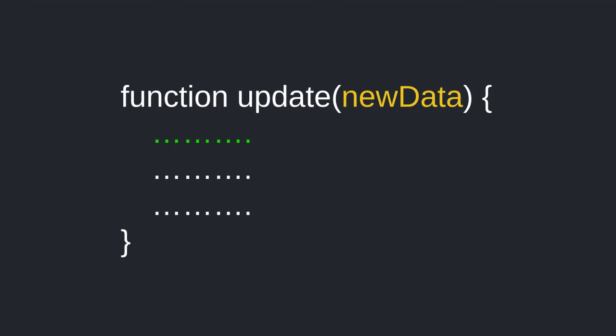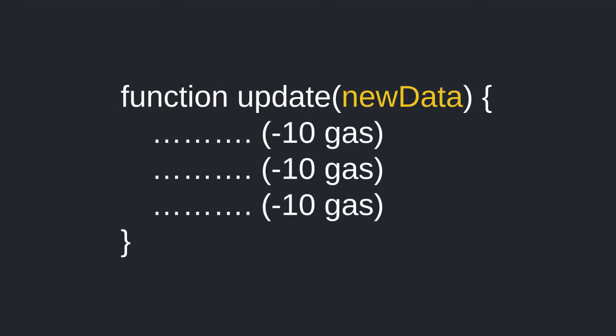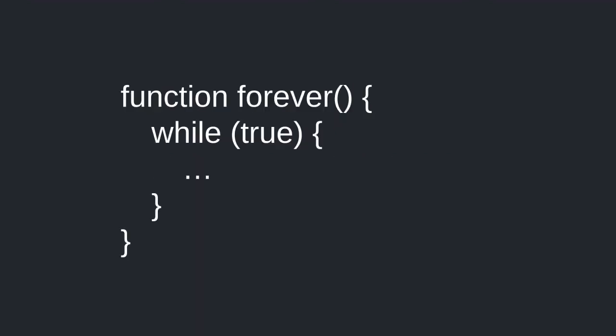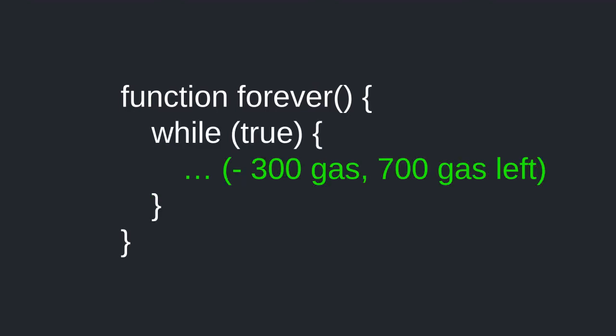At every step of computation, gas is deducted until either the function finishes execution or all the gas is used up, at which point execution is aborted. The purpose of gas is to limit the amount of computations a transaction can do. For example, imagine code that would never stop. I send a transaction with 1,000 gas. After the first iteration it uses 300 gas — 700 left. After the second, 300 more — 400 left. After the third iteration, 100 gas remains. On the fourth iteration, it uses all remaining 100 gas midway through and the function is forcefully stopped.